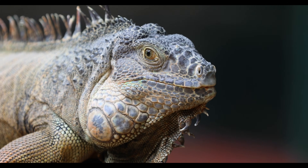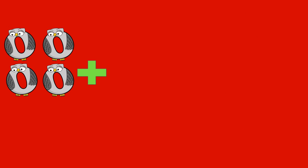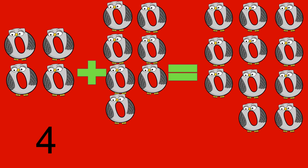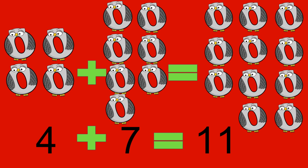Iguana. 4 owls plus 7 owls equals 11 owls. 4 plus 7 equals 11. Owl.